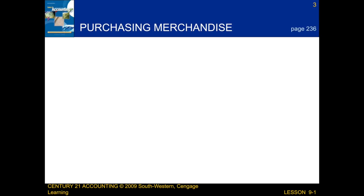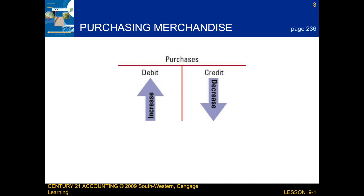Next we're going to be talking about purchasing merchandise. We're being introduced to a new account called Purchases, which is a cost of merchandise account. As you can see, it has a normal debit balance, so it increases by a debit and decreases by a credit.